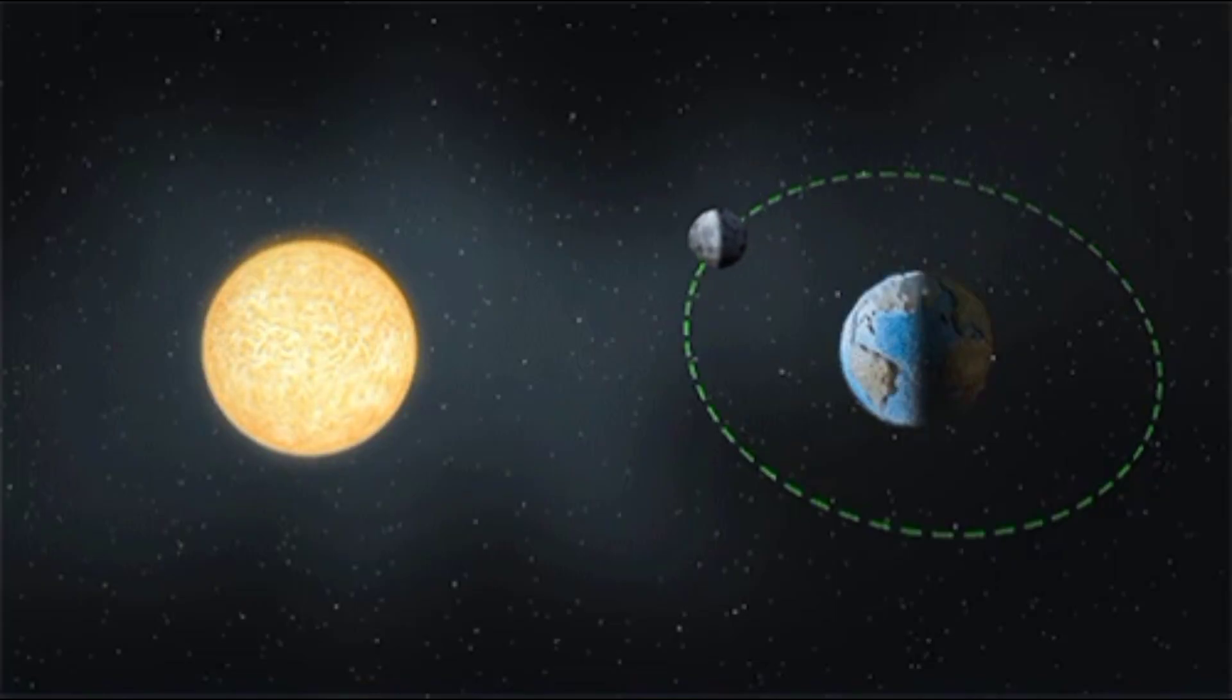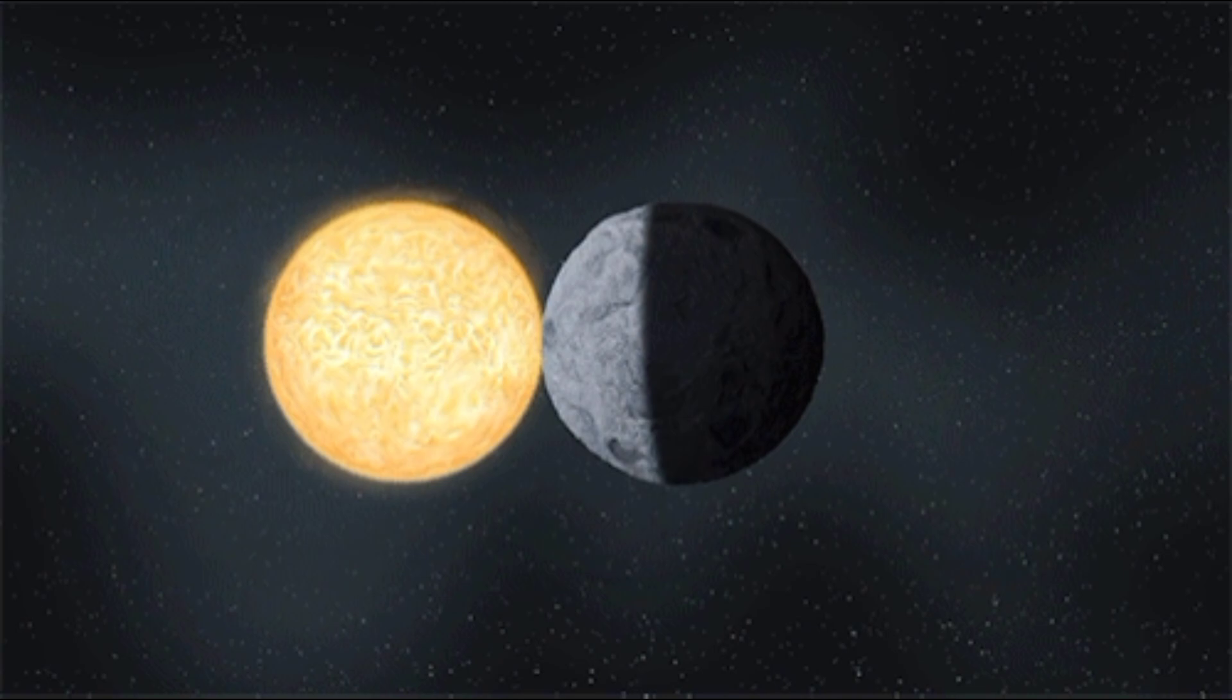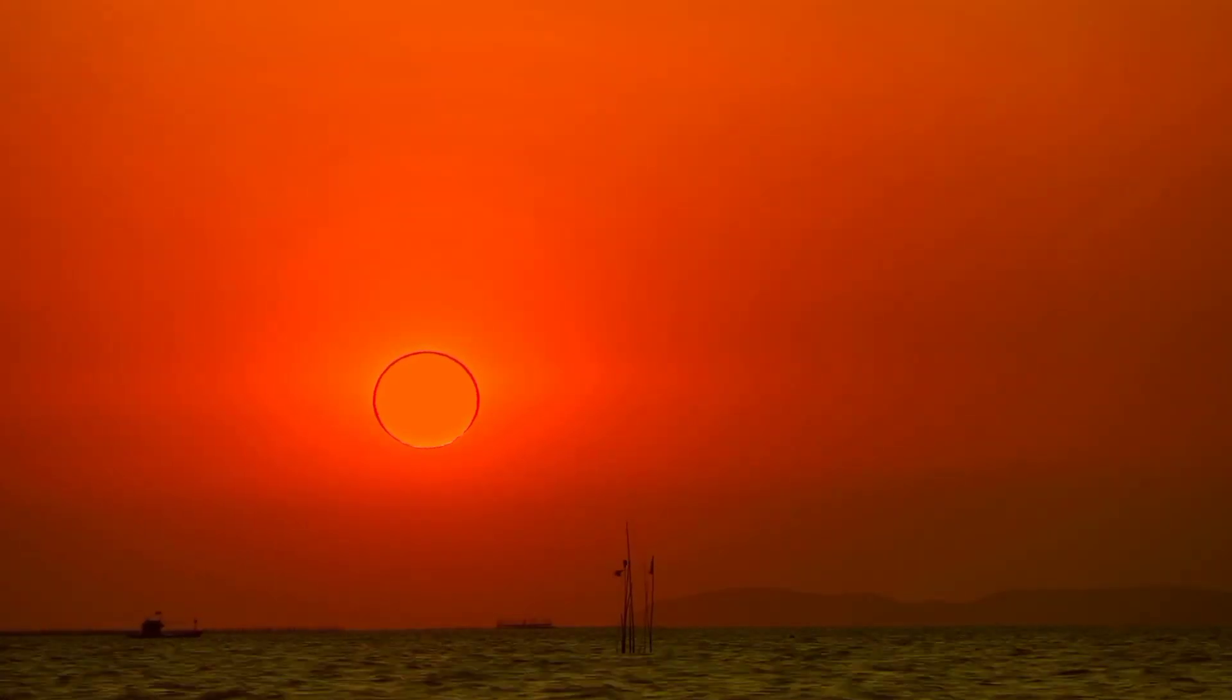But during a solar eclipse, the alignment remains the same, allowing the Moon to block the Sun's rays from reaching Earth.